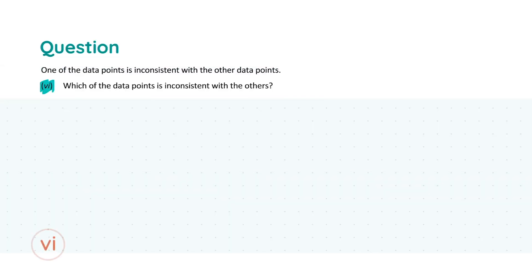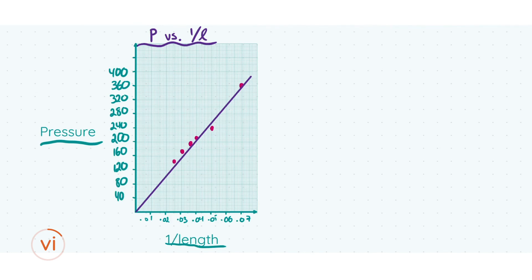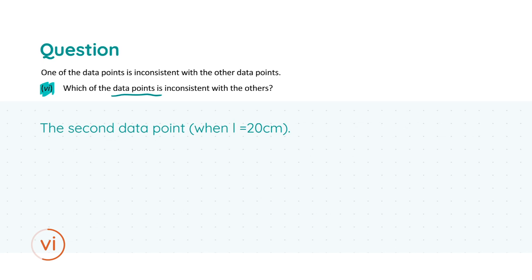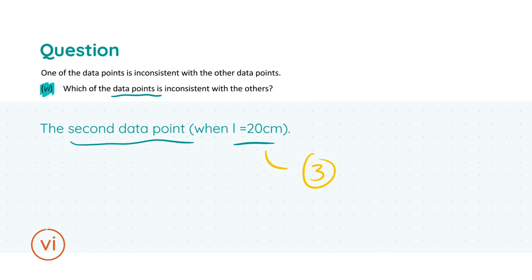Moving on to part vi, we're told that one of the data points is inconsistent and asked which one it is. Looking back at the graph, we need to identify which point is furthest off the line. The point that jumps out is the second data point — it's the only one below the line and it's quite a distance away from it. In plain terms, the inconsistent data point is when L equals 20 cm. For this conclusion you get three marks.